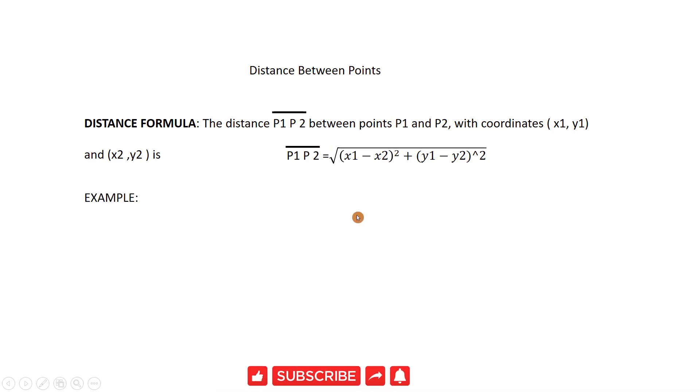Let's solve an example. Find the distance between point 1 with its coordinates 2 and 5 and point 2 which its coordinates is 7 and 17.